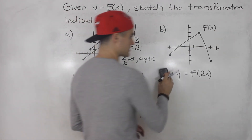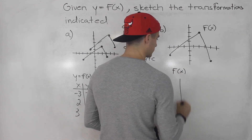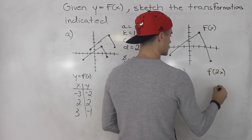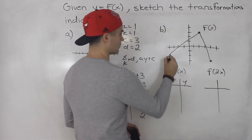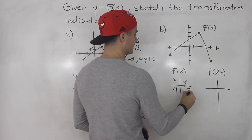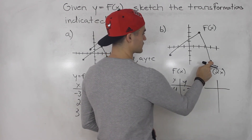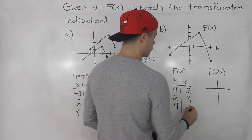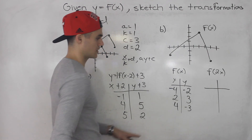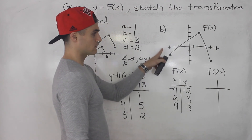So here, same process — we've got a graph of f of 2x. This point here is negative four and negative two. This point here is two and three. And this point here is four and negative three. So these are the points on the parent function.